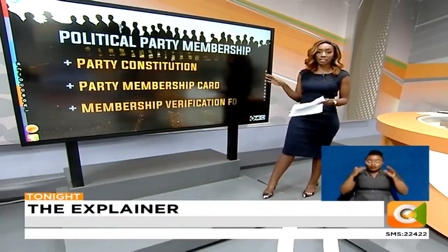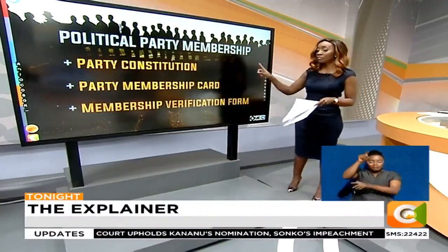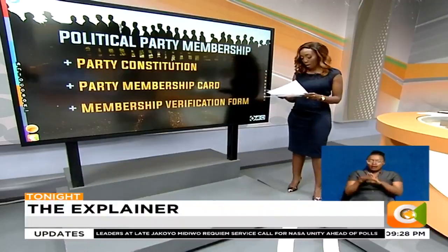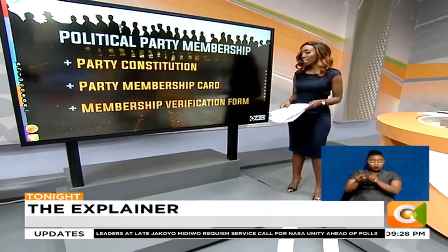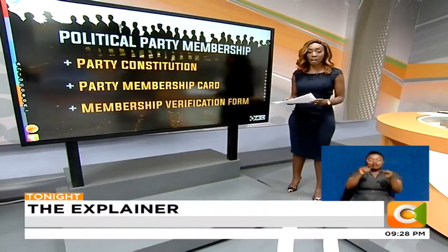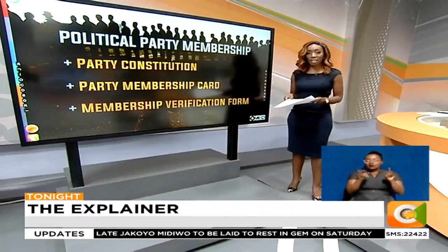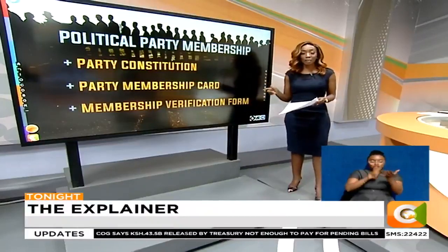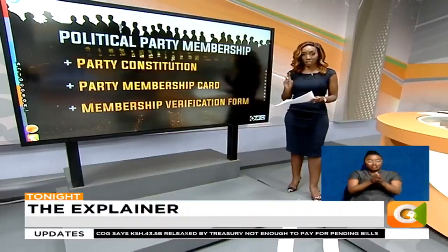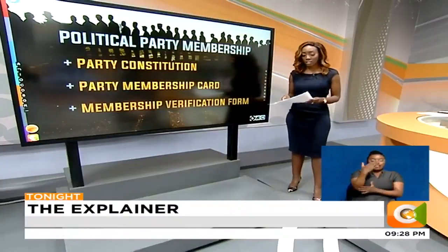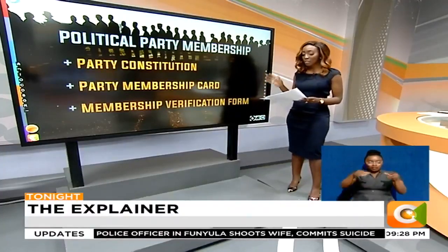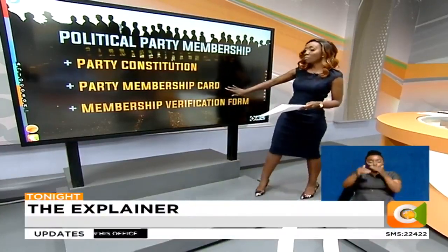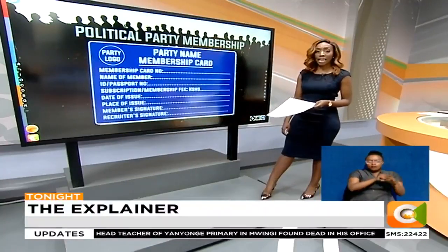If we take a look at the recruitment process itself, it has a few key elements that must be met. First of all is the party constitution — this must be spelled out to the person who is seeking membership. The party is also required to ensure that they issue a standard party membership card. And then once they have done that, there is a party membership verification form that is signed by both the party and the party member, and that is then registered as a document with the registrar of political parties.